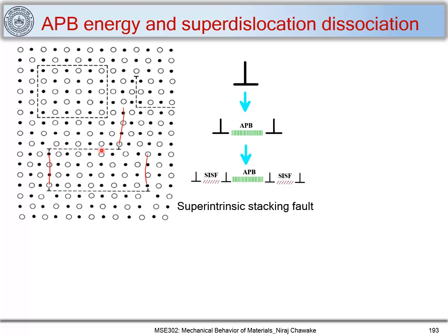When a super dislocation splits into two dislocations, it contains an antiphase boundary between them. For the antiphase boundary to be removed, the two dislocations must either annihilate each other or sweep completely over the region. We can say that when a super dislocation splits into two partial dislocations, it contains an antiphase boundary — similar to stacking fault formation in FCC, where a dislocation dissociates into two partials and creates a stacking fault.